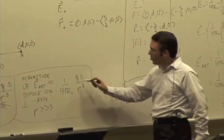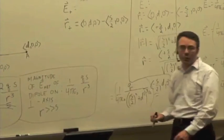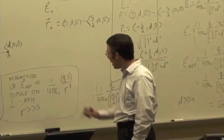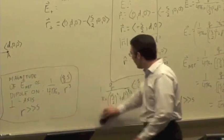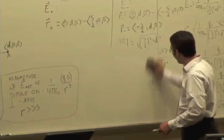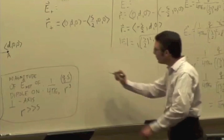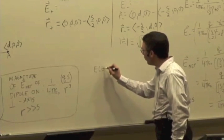They depend on the charge and the charge separation. In fact, this quantity, q times s, we often group those two things together and give it a name. This is called the electric dipole moment.